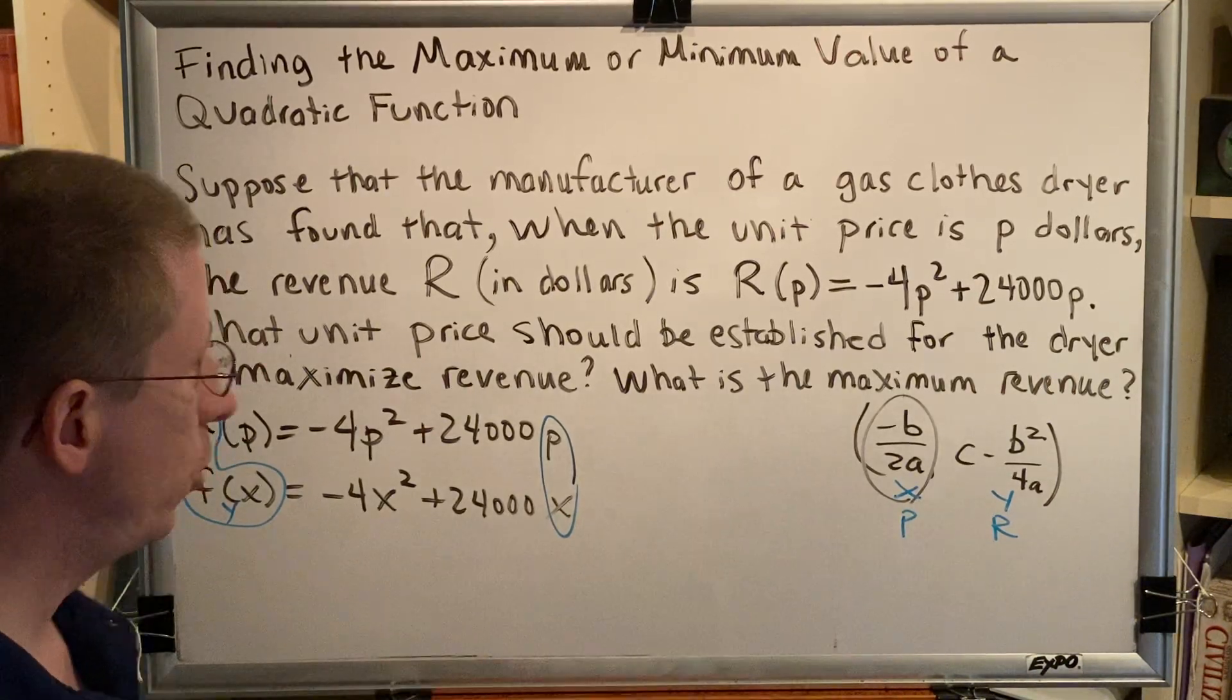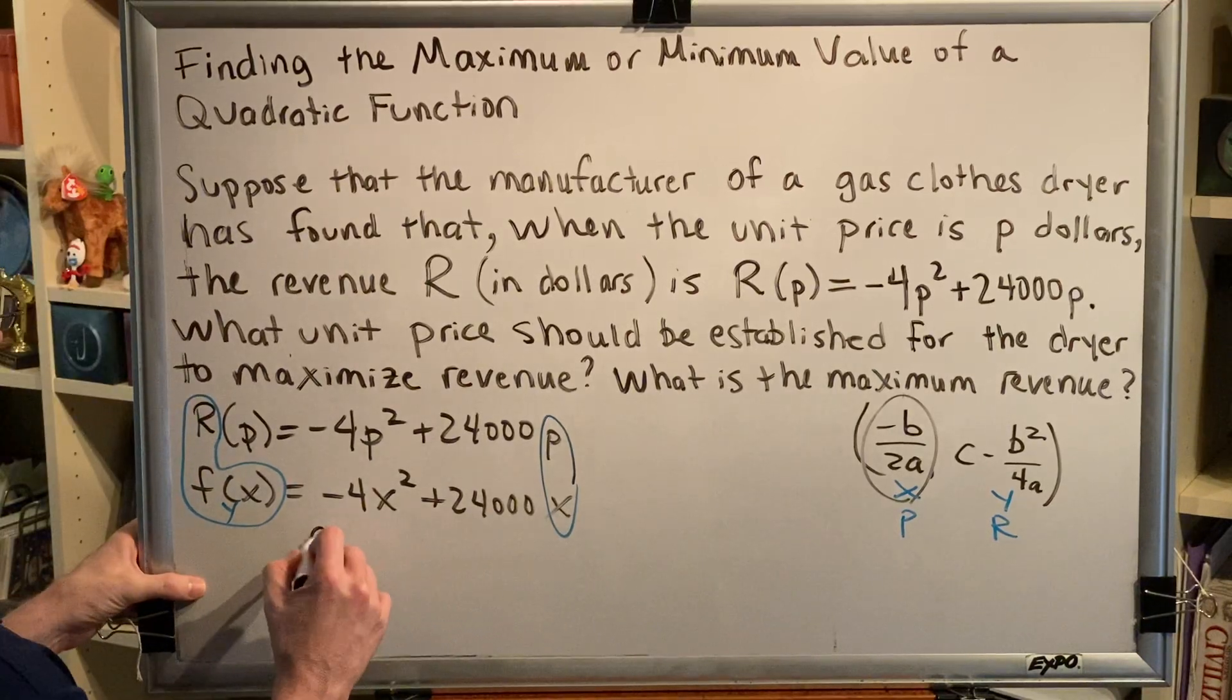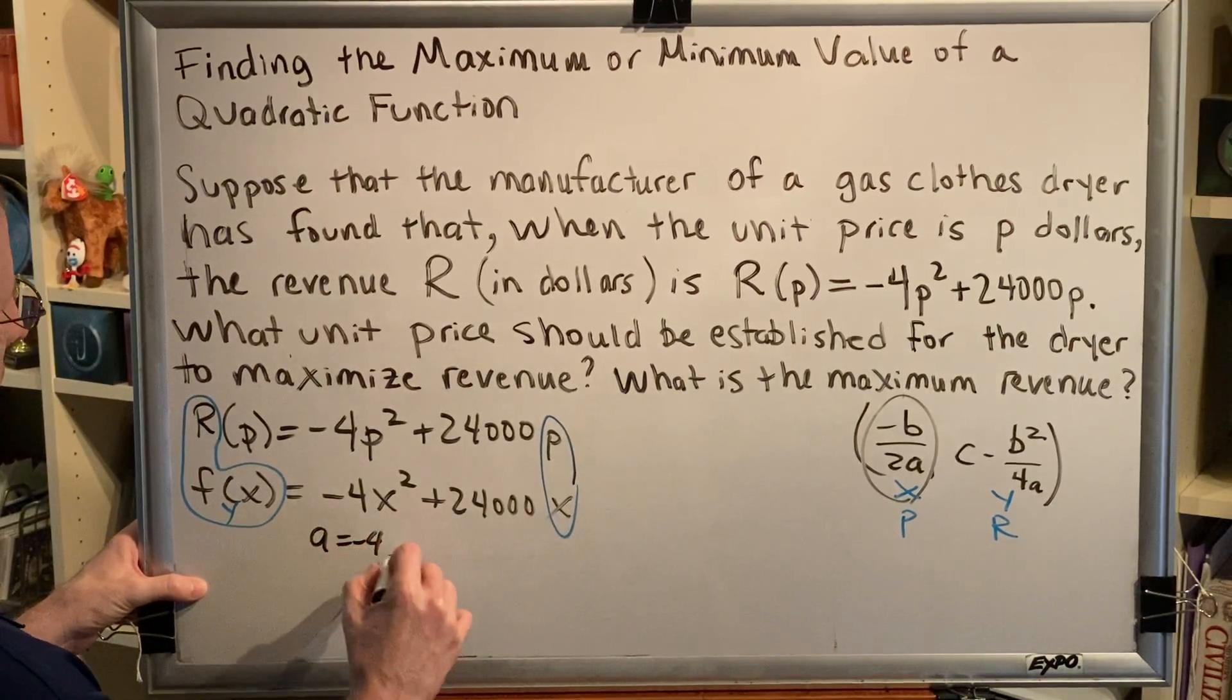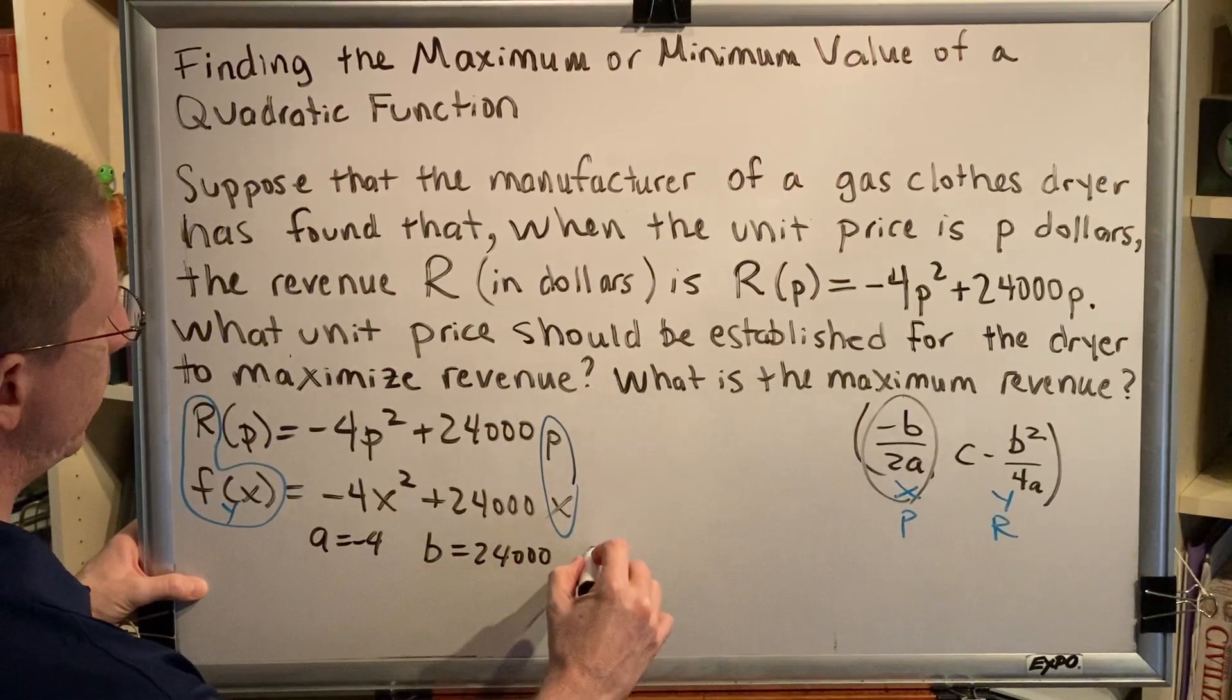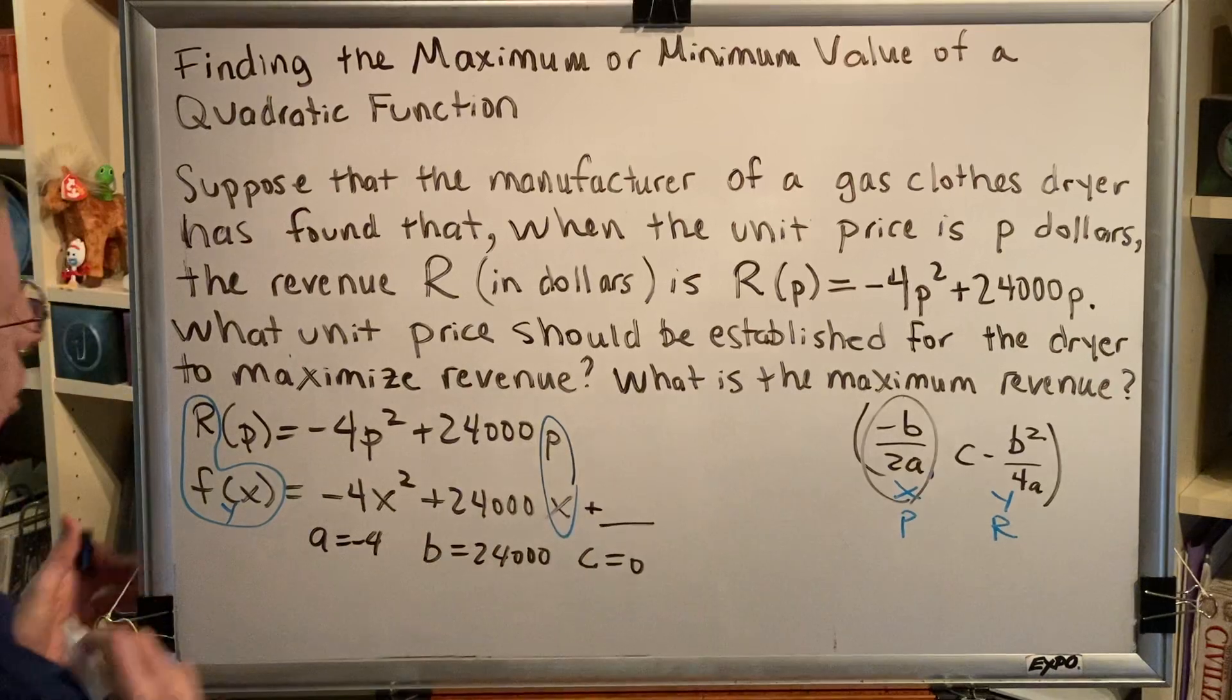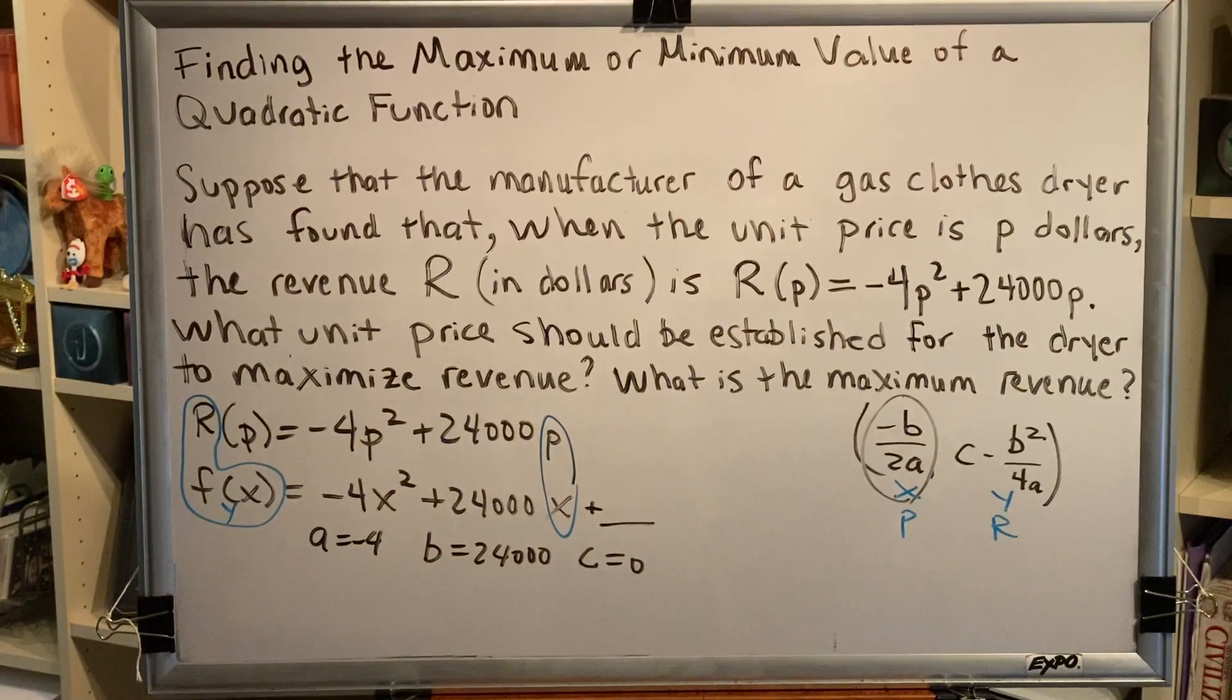We just have to plug in to our formula. So we can see that a is equal to negative 4, b is equal to 24,000, c is equal to zero because there is no constant term in our function, and we plug all of those into our formula.